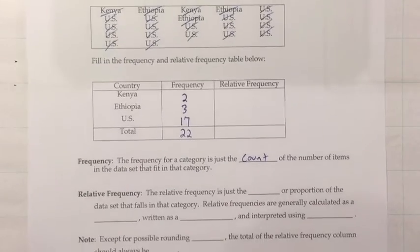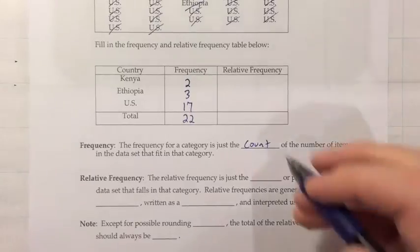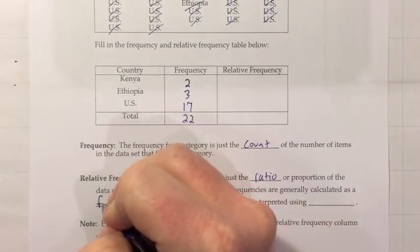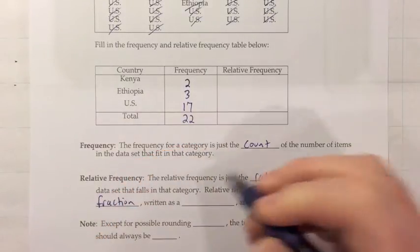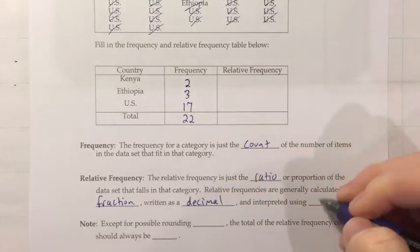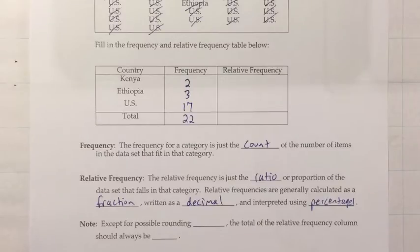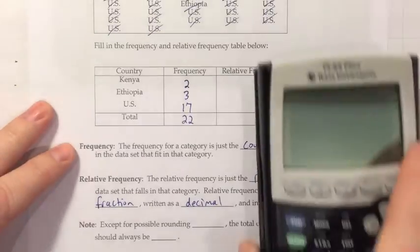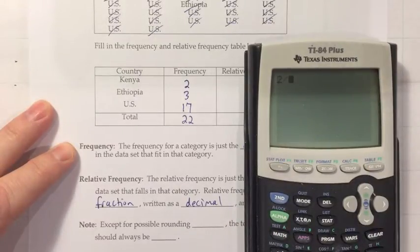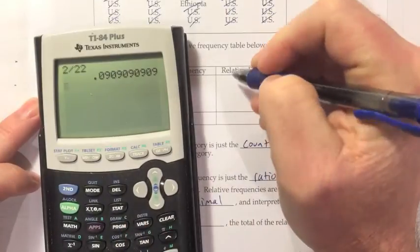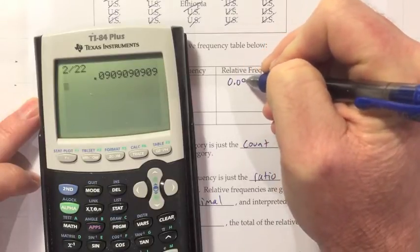Now for relative frequencies. The relative frequency is the ratio or proportion of the data set that falls in that category. Relative frequencies are generally calculated as a fraction, then written as a decimal, and interpreted using percentages. For Kenya: 2 women out of 22 in the table. We divide 2 by 22 to get the fraction, and the decimal is 0.0909. Typically in statistics we use at least four decimal places.